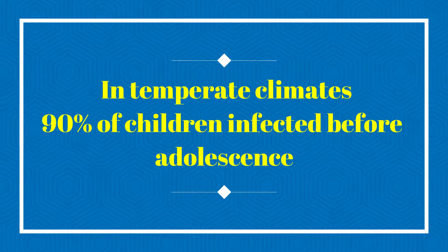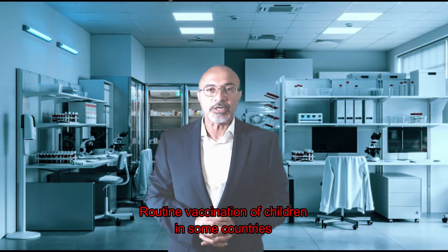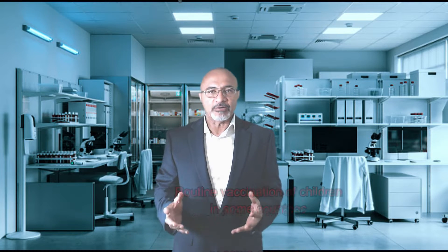In temperate climates, without widespread vaccination, 90% of children become infected before they reach adolescence, whereas in the tropics, many people only become infected in adulthood when the morbidity they suffer is much greater. A varicella or chicken pox vaccine is used routinely in some countries to prevent chicken pox in children. Varicella virus is highly contagious and is spread by the airborne or droplet routes or by direct contact with lesions.